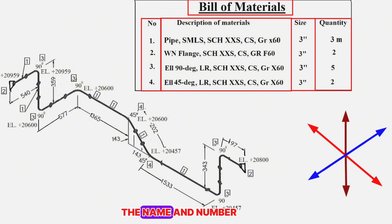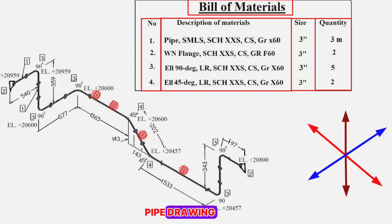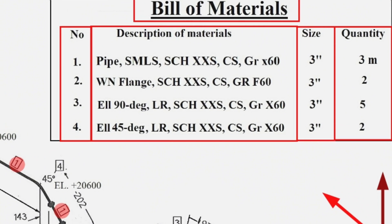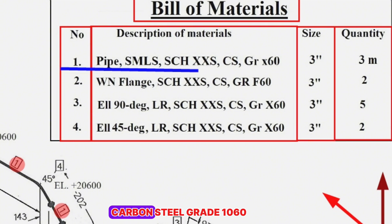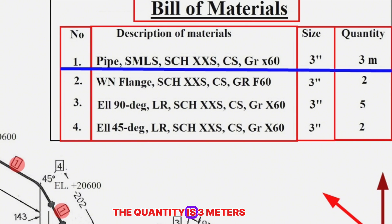Now let's learn the name and number of pipe fittings used in this pipeline. Item number 1 is shown in several places on this pipe drawing. Item number 1 is pipe, seamless, schedule XXS, carbon steel, grade 1060, size 3 inches, quantity 3 meters.